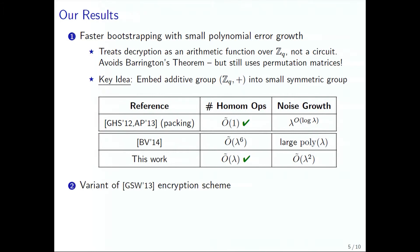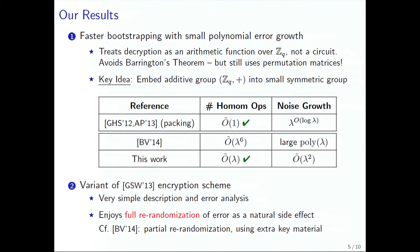Our second result is a variant on the GSW encryption scheme, which has a much simpler description and error analysis, and it also has full re-randomization of error as a natural side effect. Brakerski and Vaikuntanathan did the same thing via partial re-randomization, but they had to use extra key material. Our thing is much more natural and has applications to other papers.